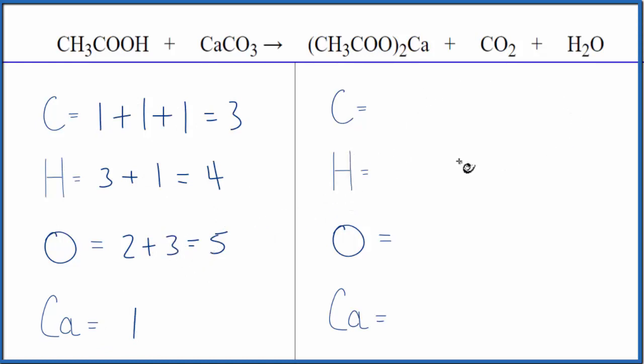On this side of the equation, it's even more work because we have two of everything in parentheses here. So we have one carbon, two carbons. So two times two, that's four carbons, plus this carbon here, five total carbons.